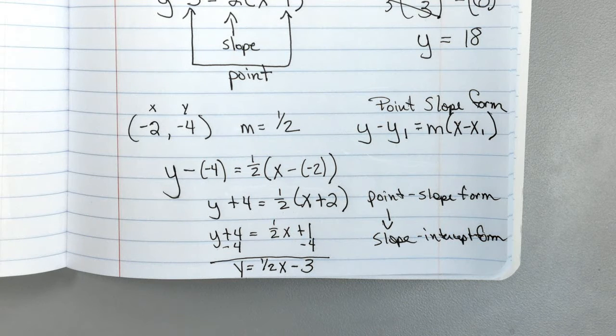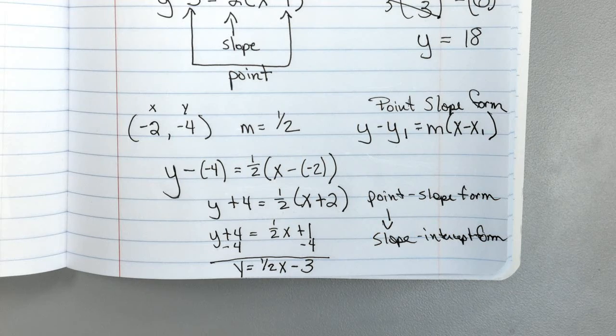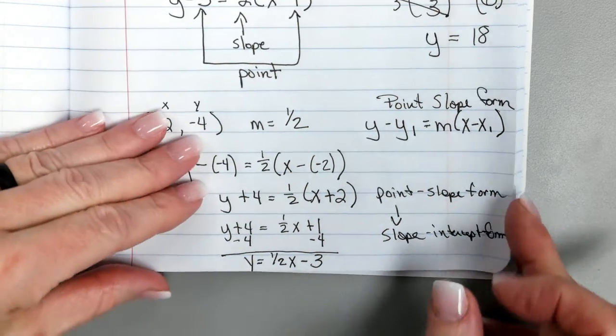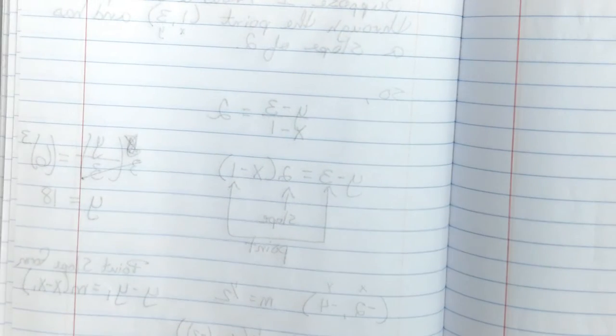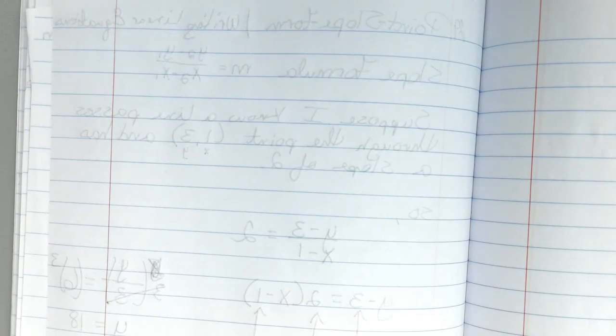So y would equal 1/2 x minus 3. So that's the same equation, it's the same line. It's just different ways to write it depending on where you start, what they're looking for, what you need to have done. Because we could even take this line, and we could convert it to standard form. We're not going through that today, but we could do that. All right, is that sort of making sense? Sort of, maybe? Let's do some more and then it will. Once you get it, you'll be like, oh, okay, that's not bad. It just looks different.